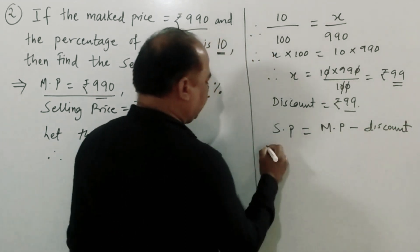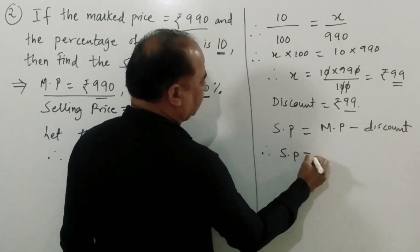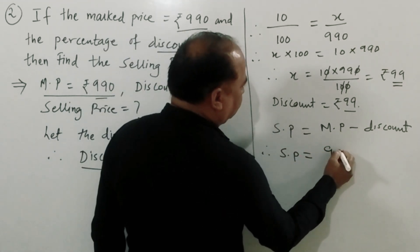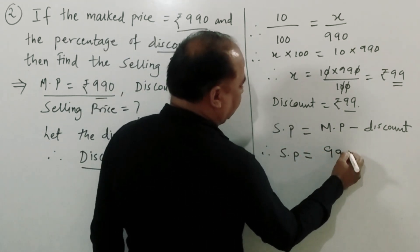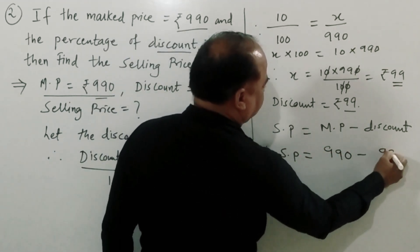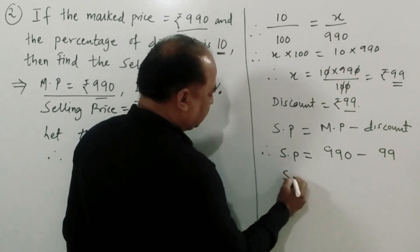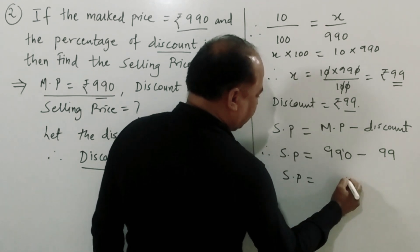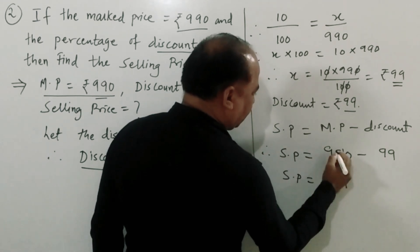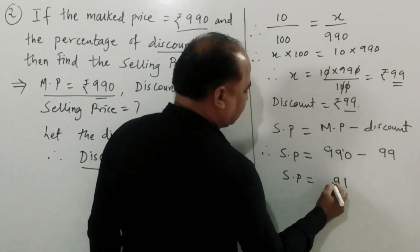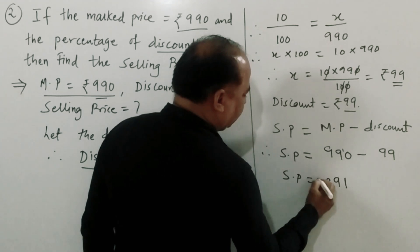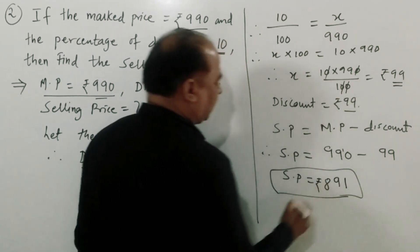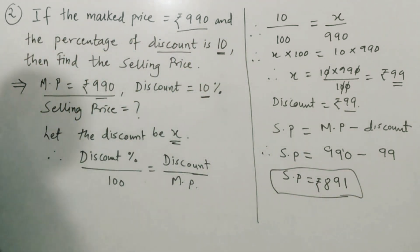Therefore, selling price is equal to mark price minus discount, which is equal to 990 minus 99, giving us a selling price of 891 rupees.